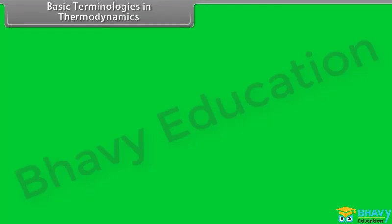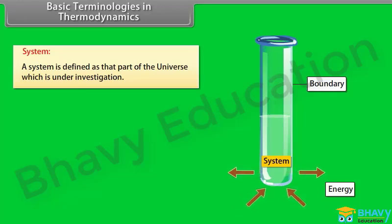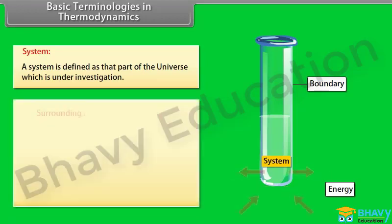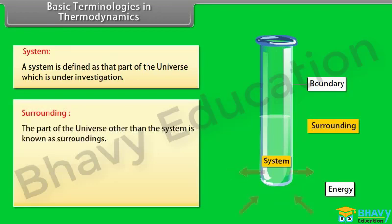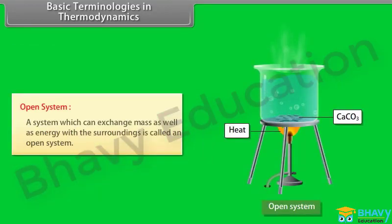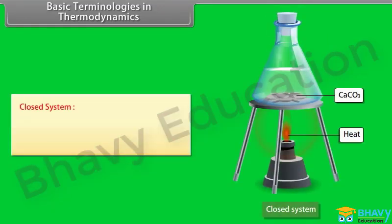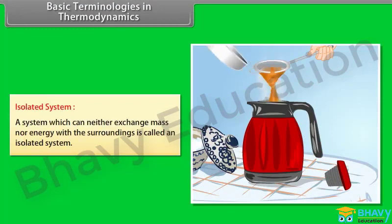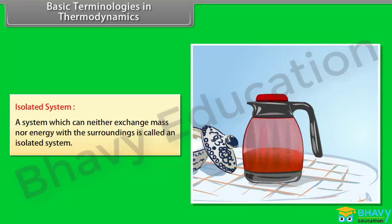Basic terminologies in thermodynamics. System: a system is defined as that part of the universe which is under investigation. For example, if we are studying the effect of temperature on the properties of water, then water will be taken as the system. Surroundings: the part of the universe other than the system is known as surroundings. For example, if a reaction mixture is taken in a test tube, the reaction mixture constitutes the system, the walls of the test tube constitute the boundary, and everything else is the surroundings. A system may be classified into three types: open system — a system which can exchange mass as well as energy with the surroundings; closed system — a system which can exchange energy with the surroundings but not mass; and isolated system — a system which can neither exchange mass nor energy with the surroundings.